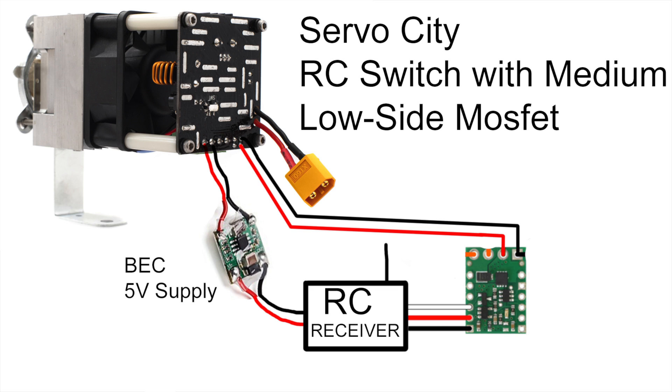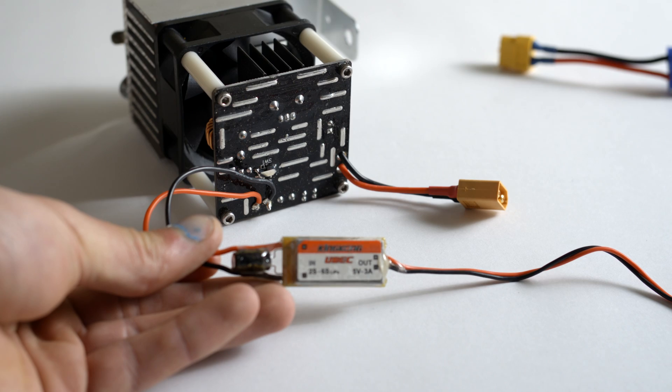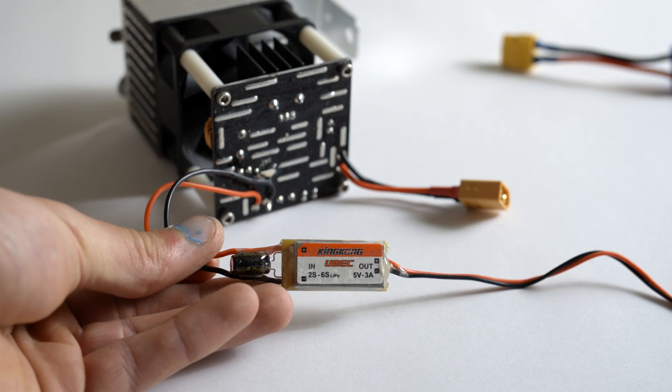You'll need a BEC capable of handling a 6S LiPo to power the receiver. I typically like to solder its input wires to the underside of the screw terminal.